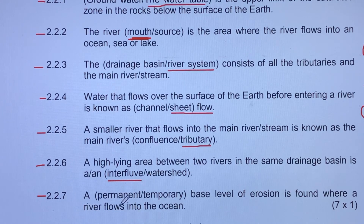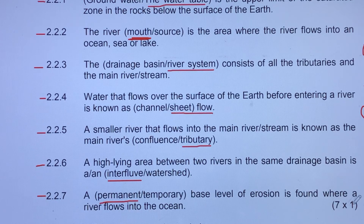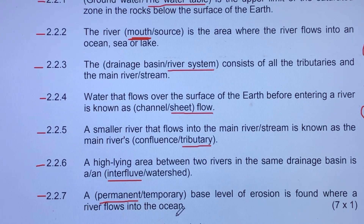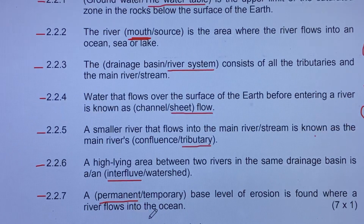2.2.7: a permanent or temporary base level of erosion is found where a river flows into the sea or ocean. That is a permanent base level. A permanent base level of erosion is found where the river flows into the ocean because there is less vertical erosion in the lower course and more lateral erosion.